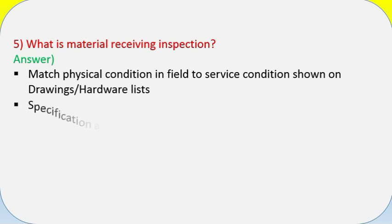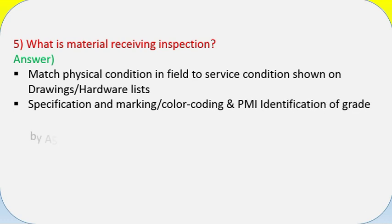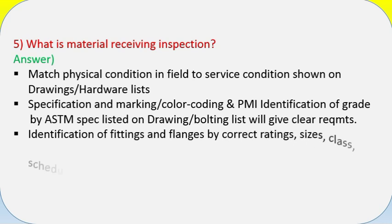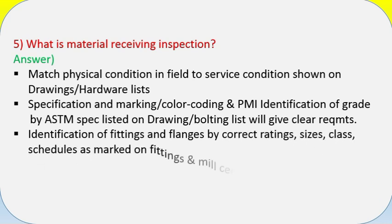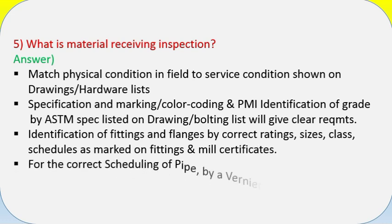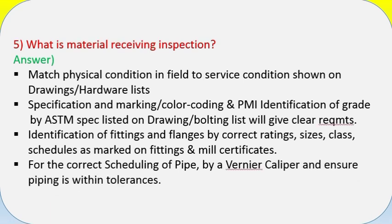Question 5: What is material receiving inspection? Answer: Match physical condition in field to service condition shown on drawing/hardware lists, specification and marking/color coding, and PMI identification of grade. ASTM spec listed on drawing/bolting list will give clear requirements. Identification of fittings and flanges by correct ratings, sizes, class, schedules as marked on fittings, and mill certificates for correct scheduling of pipe verified by vernier caliper, ensuring piping is within tolerances.